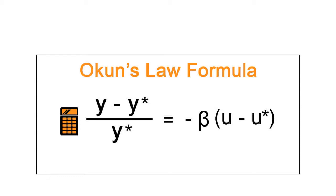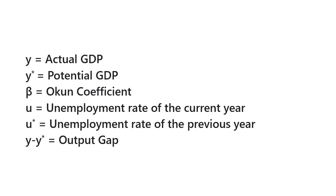In order to calculate Okun's Law, you need to know the formula. The formula consists of five main components: Y, Y-bar, U, U-bar, and Beta. The formula is: (Y − Y-bar) / Y-bar = −Beta × (U − U-bar). Here, Y is actual GDP, Y-bar is potential GDP, Beta is the Okun coefficient, U is the unemployment rate of the current year, U-bar is the unemployment rate of the previous year, and Y minus Y-bar is the output gap — obtained by deducting actual GDP from potential GDP.